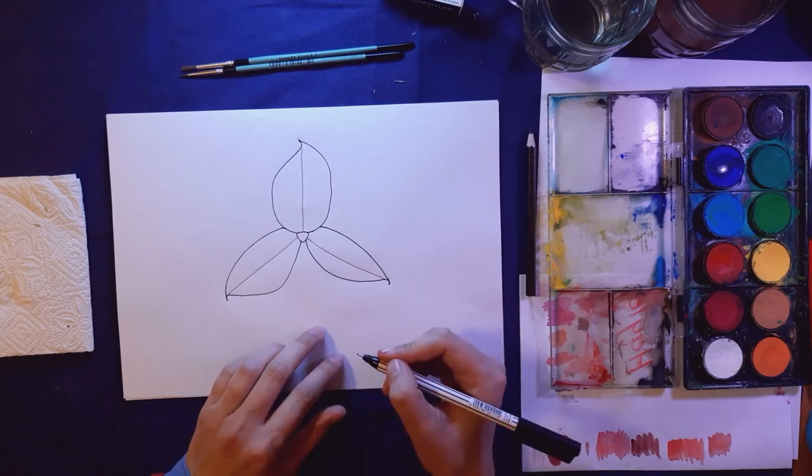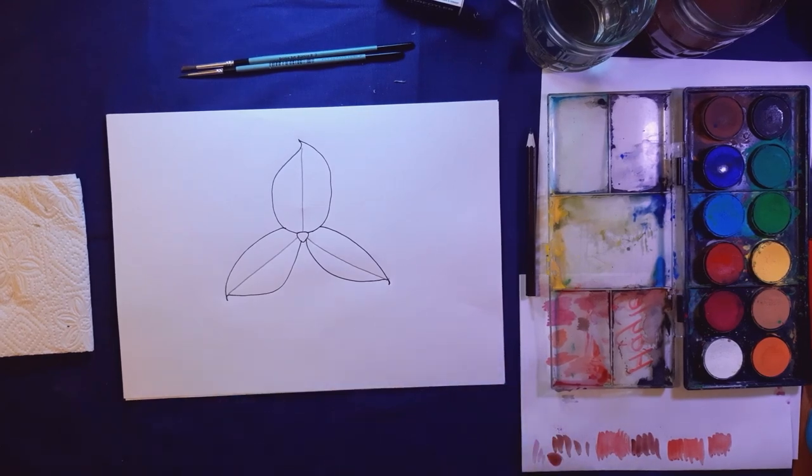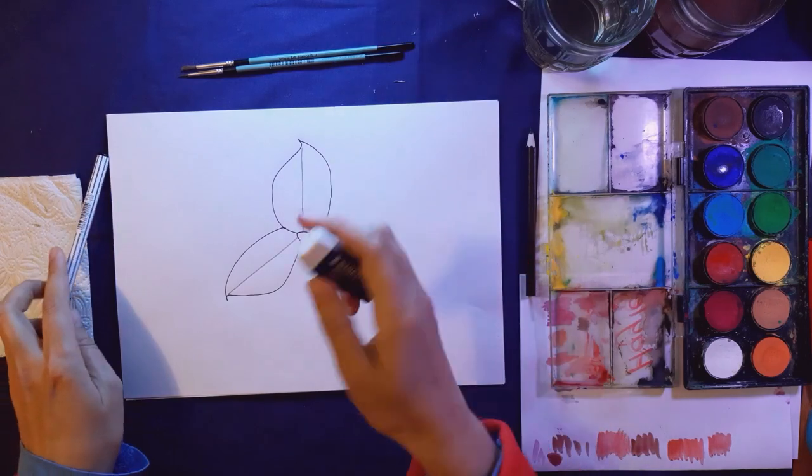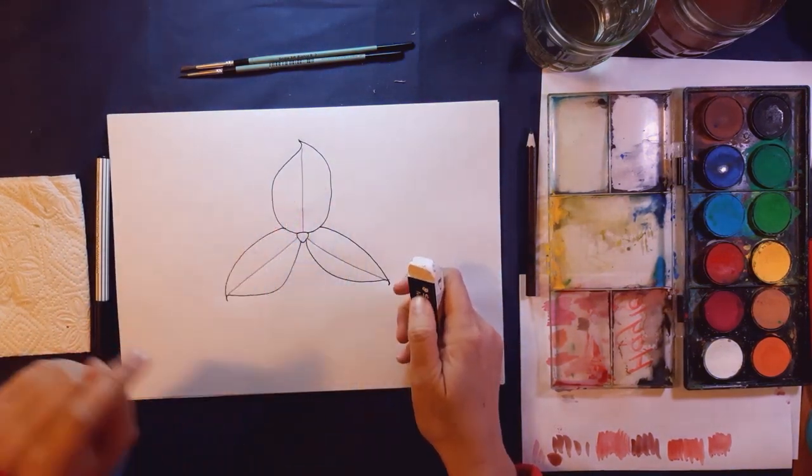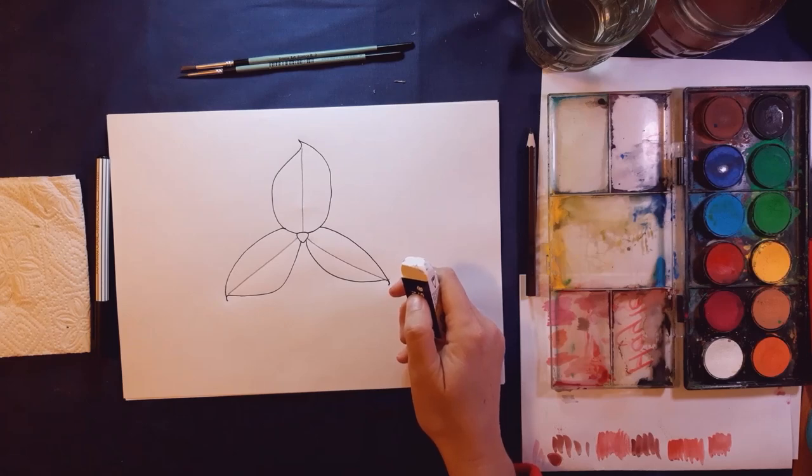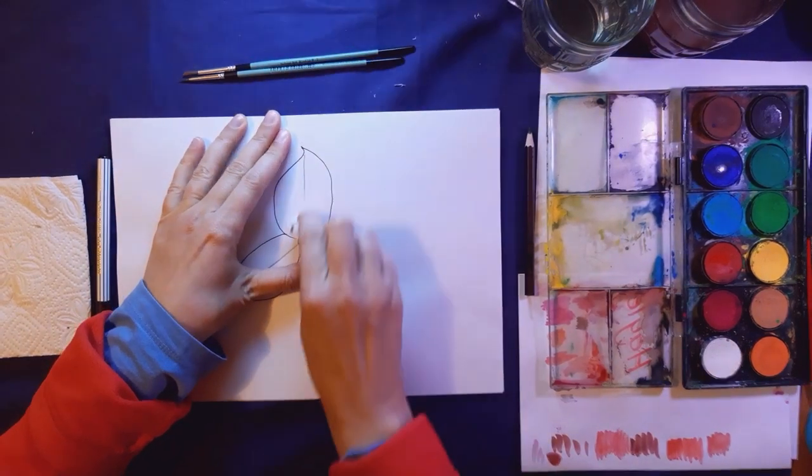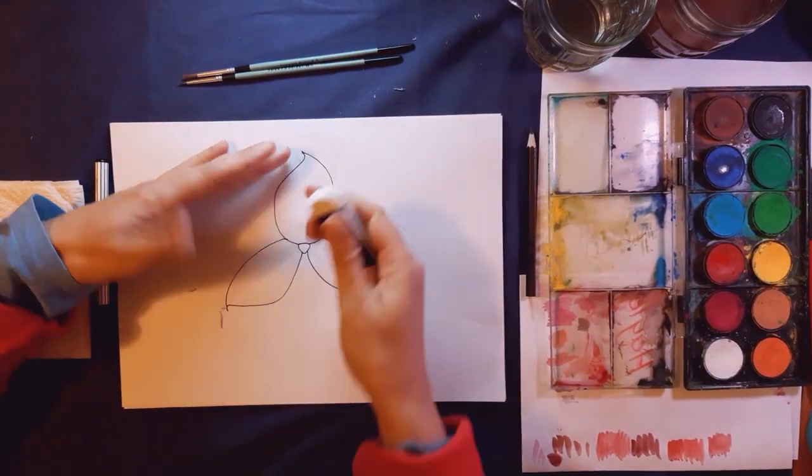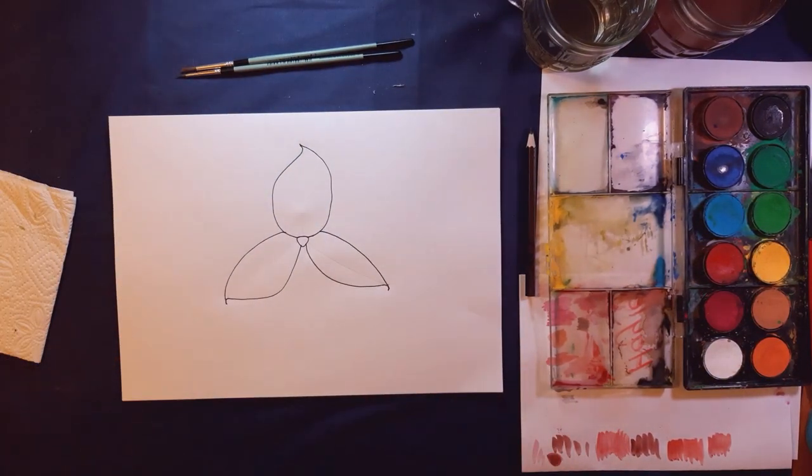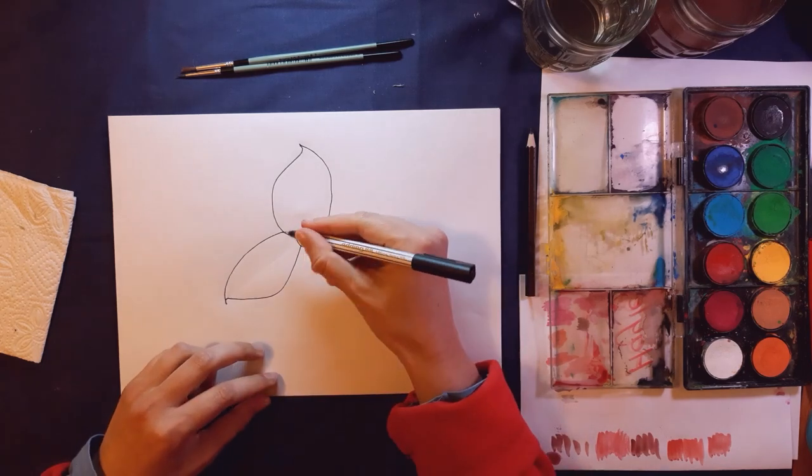These are the basic shape for our Disa. I'm going to take my eraser and you do the same. I want you to erase now these three straight lines that you drew as guidelines for your flowers. We've got those out of the way.